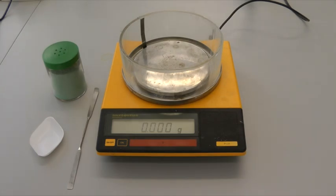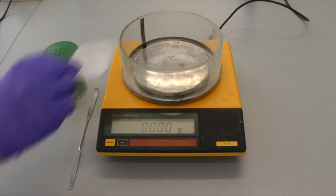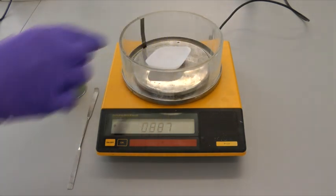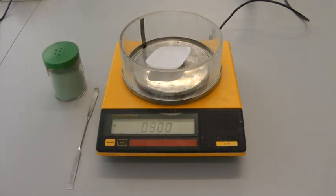A weighing boat or alternative container such as a beaker should be placed on the balance. The balance should then be zeroed or tared by pressing the appropriate button. Your teacher will give you guidance.